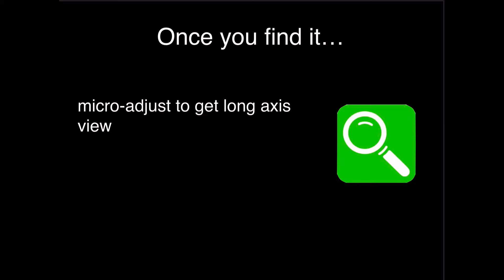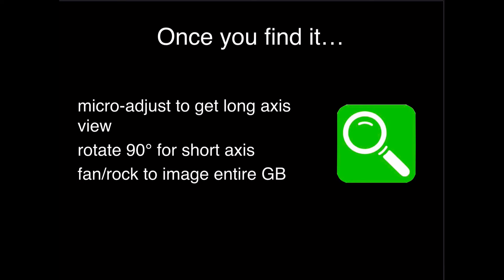Once you find the gallbladder, the most important thing is to just stop and don't move. Once you have it in view — and as we say, it can be hard to find — make small micro-adjustments to get the long axis in view. Once you can visualize the whole long axis, rotate the probe 90 degrees without changing the angle to look at it in a cross-sectional or short axis view. In both the long axis and the short axis views, fan through the entire image to make sure you're not missing any abnormal pathology.